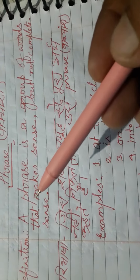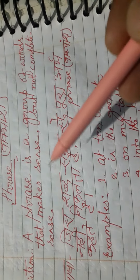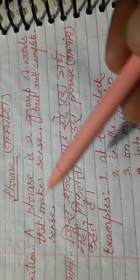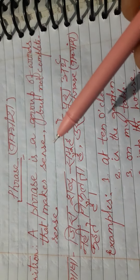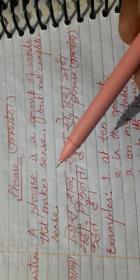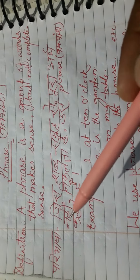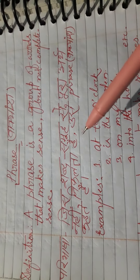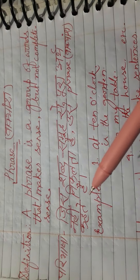Definition of phrase: A phrase is a group of words that makes sense but not complete sense. That means a phrase is a set or group of words which gives us incomplete sense. In Hindi, it means Parivhasa. Jis shabd samuh se pura arth nahi nikalta hai, usse phrase ya vakyanj kahte hai.